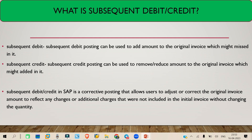Let's understand what is the subsequent debit. Let's say you have done the invoice, and now your vendor is asking you for some more price — some extra price. For example, they are not sending extra material, but for the existing material they are asking some extra price, like loading charges, or they are saying the price has increased. So you have to pay some extra amount, and in that case you will be creating one more document, which is a subsequent debit.